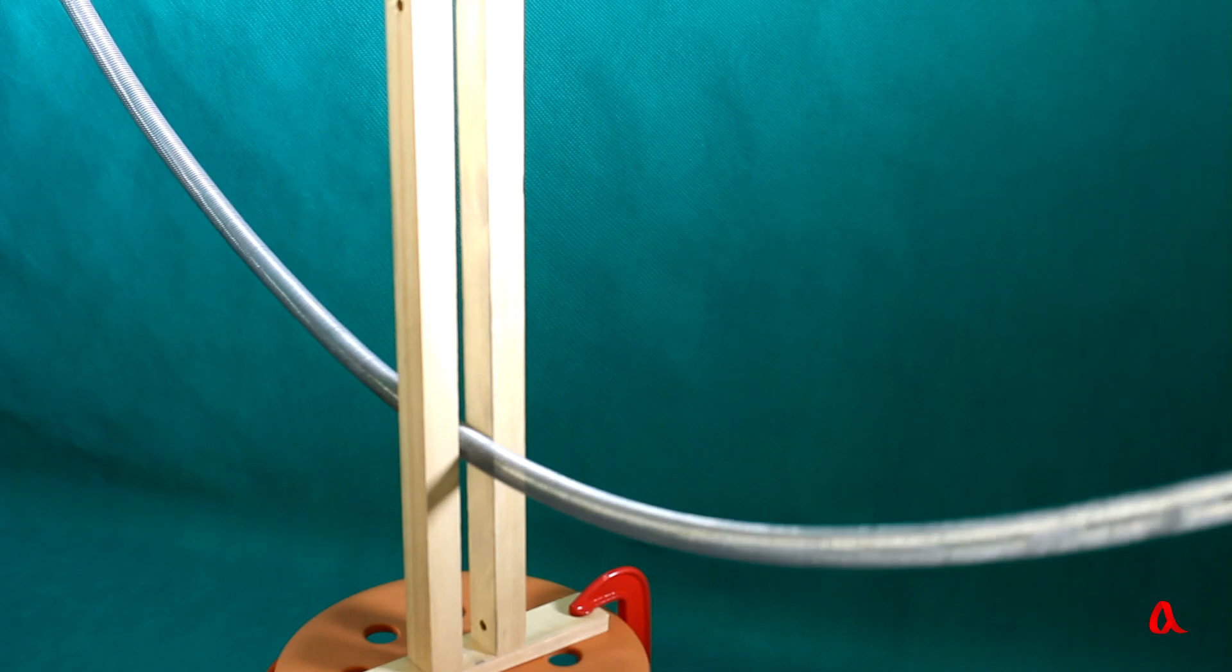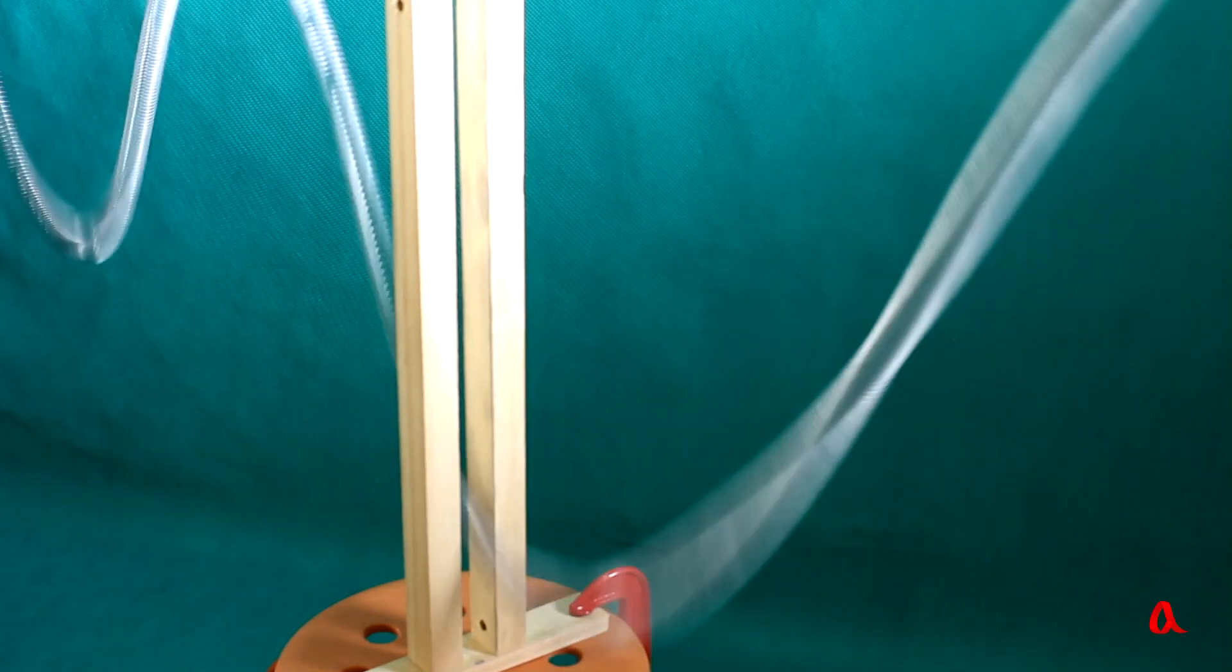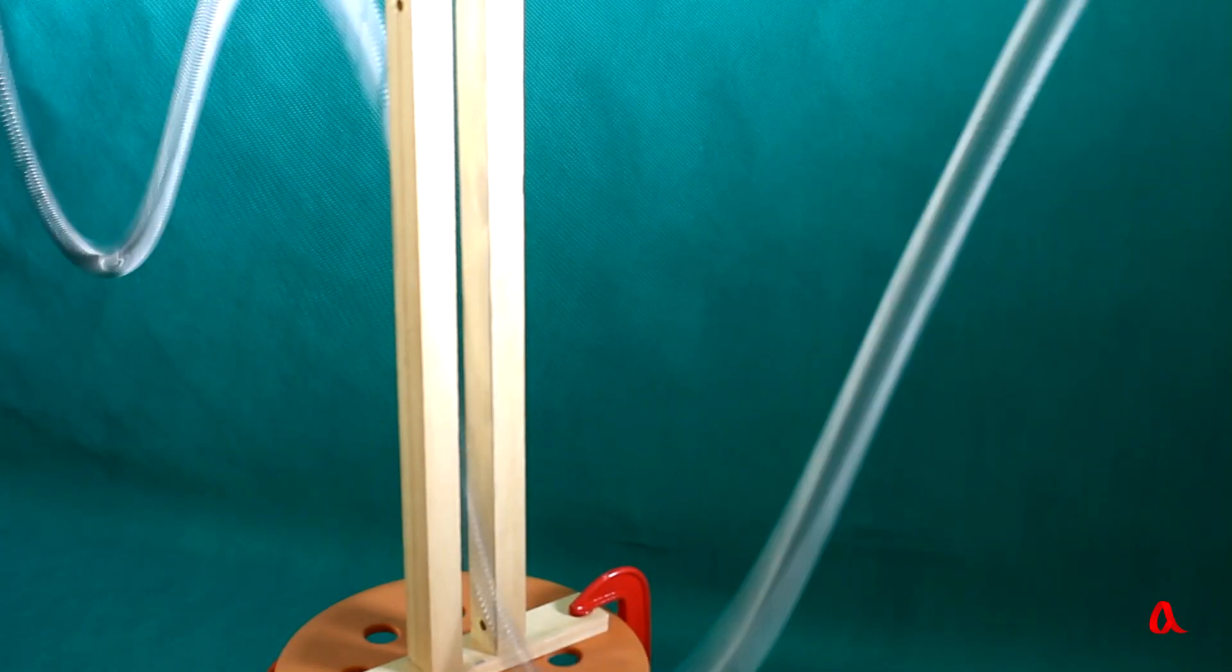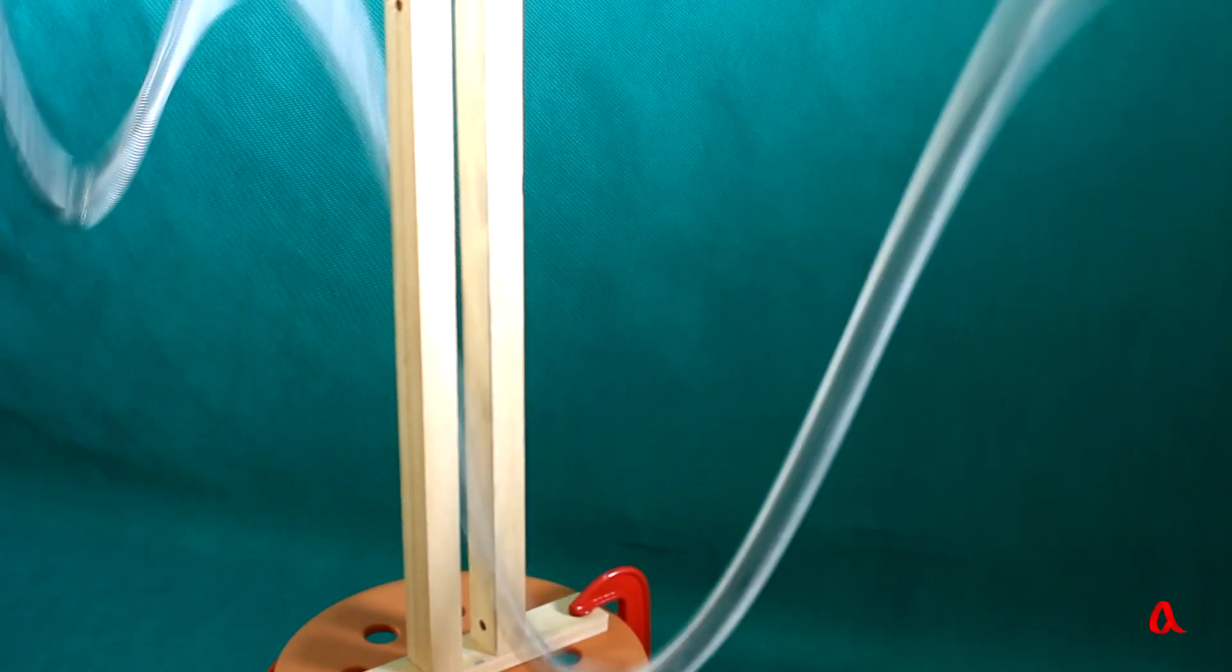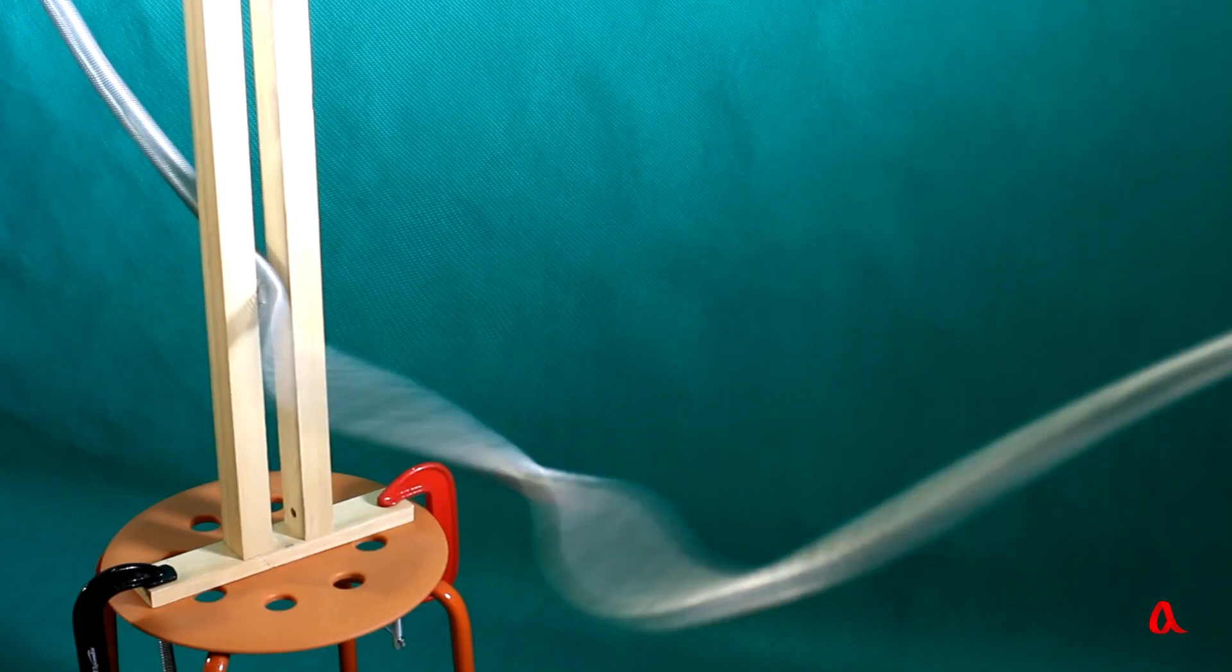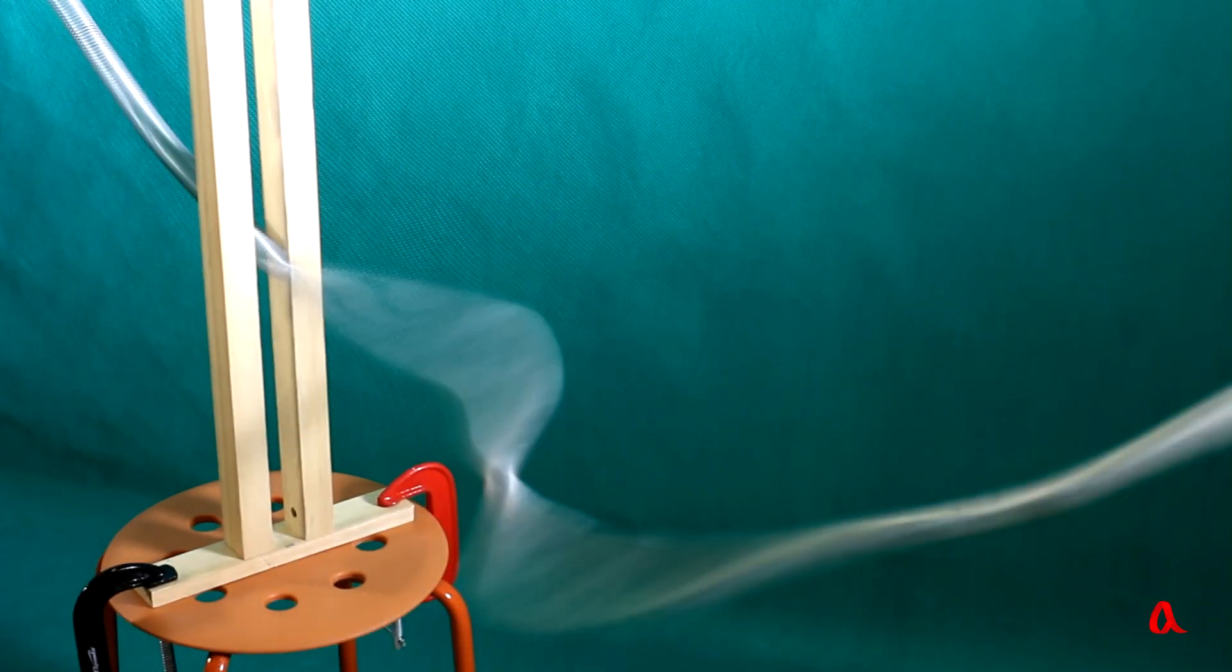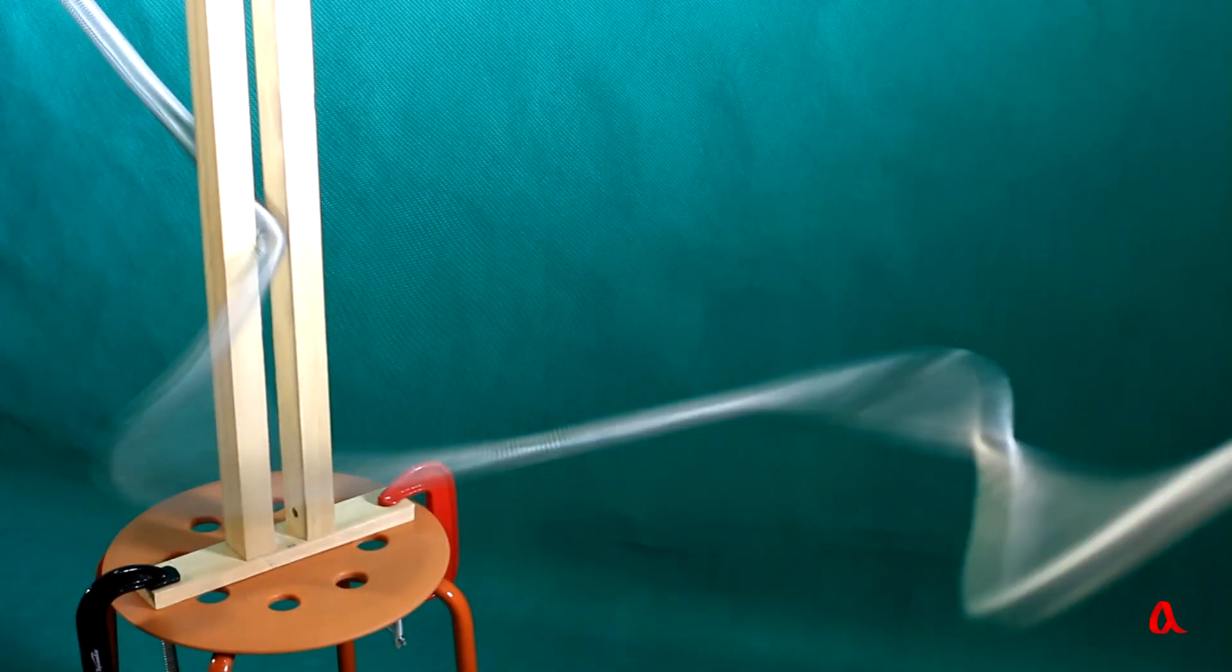This phenomenon can be illustrated by a simple mechanical model. A spring is passed through a grid of two parallel rods. We will swing one end of the spring parallel to the rods. Such waves pass through the grid. But if the spring is swung at 90 degrees to the grid, the same kind of waves will no longer pass through it.